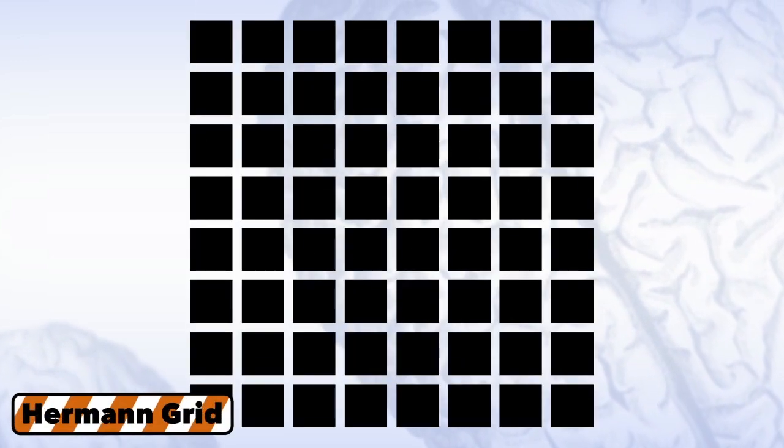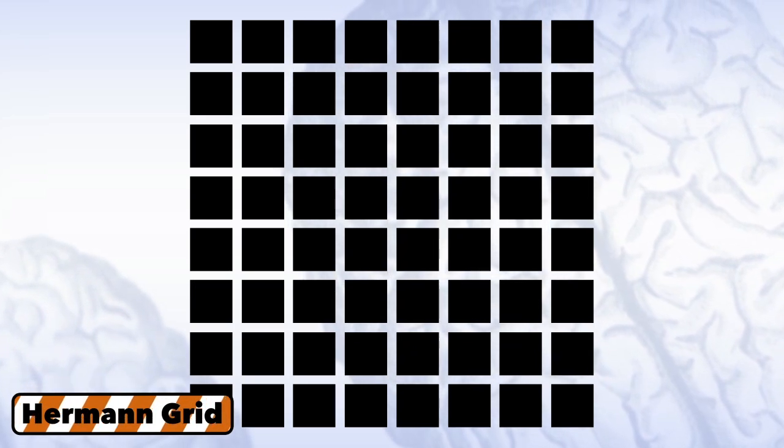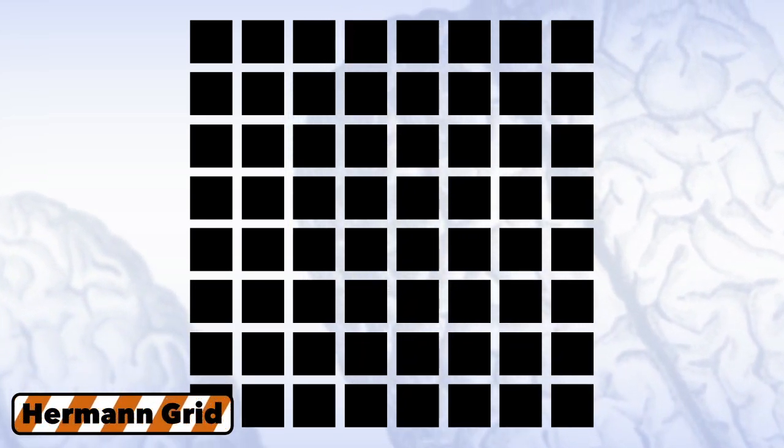The effect can be seen in this famous illusion, the Hermann grid, where you can see a sort of gray circle at the intersection points of each square. What about those illusions that make it seem like a still image is moving?